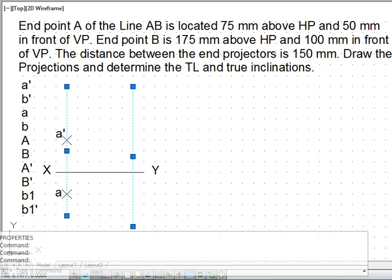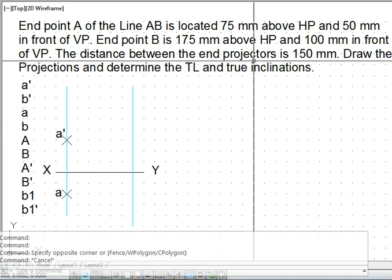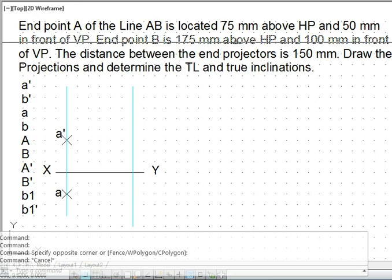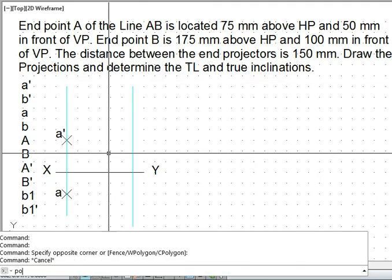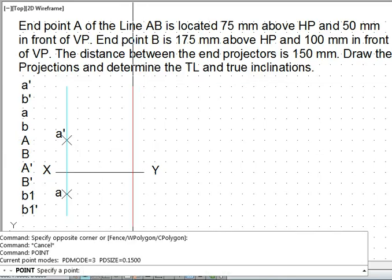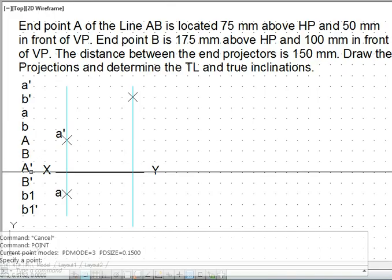Now point B, the information about point B is, point B is 175 mm above HP. That means 7 grid spaces above XY line. So point B has to be 3, 4, 5, 6, 7 above XY line. Above HP means above XY line. That is how we locate point B dash.